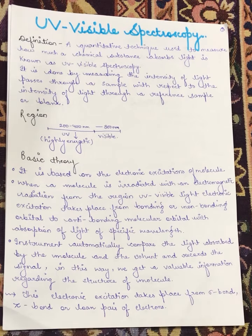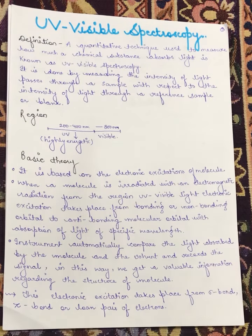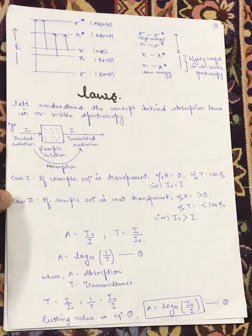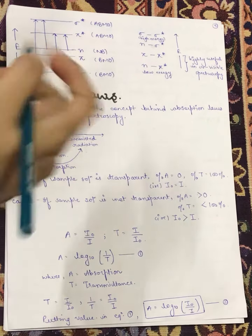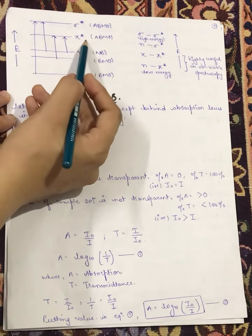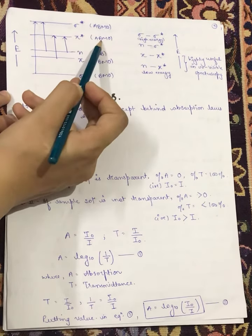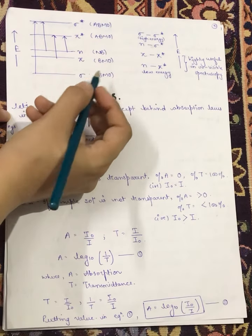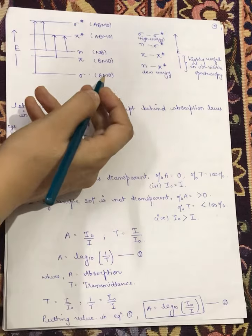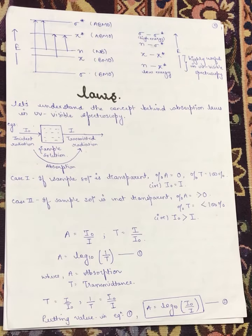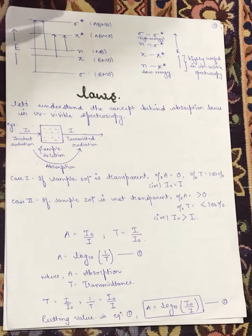The electronic excitation takes place from the sigma bond, pi bond, or lone pair of electrons. This is shown in a diagrammatic representation: we have the non-bonding electrons, the sigma anti-bonding molecular orbital, the pi anti-bonding molecular orbital, the pi bonding molecular orbital, and the sigma bonding molecular orbital, arranged according to energy level.